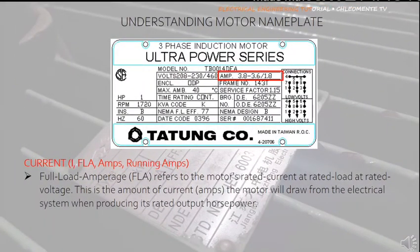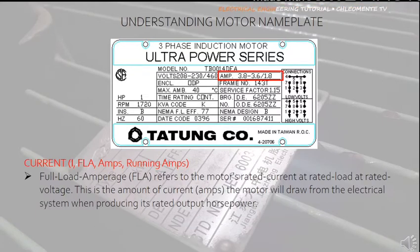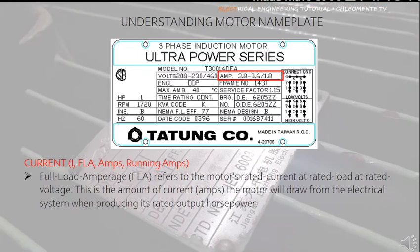Current is denoted by FLA, amps, or running amps. Full load amperage, or FLA, refers to the motor's rated current at rated load and rated voltage — the amount of current the motor will draw when producing its rated output horsepower. In this example, the nameplate shows two current ratings: 3.8 to 3.6 amperes and 1.8 amperes, corresponding to the two voltage ratings. For 208 to 230 volts, the rated current is 3.8 amperes, and when supplied by 460 volts, the full load current is 1.8 amperes.